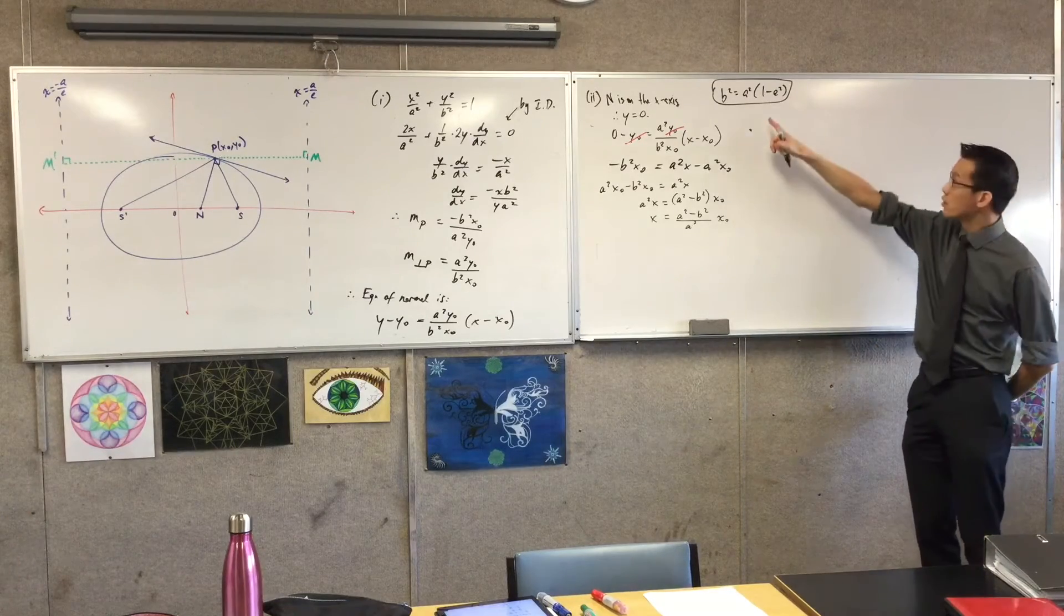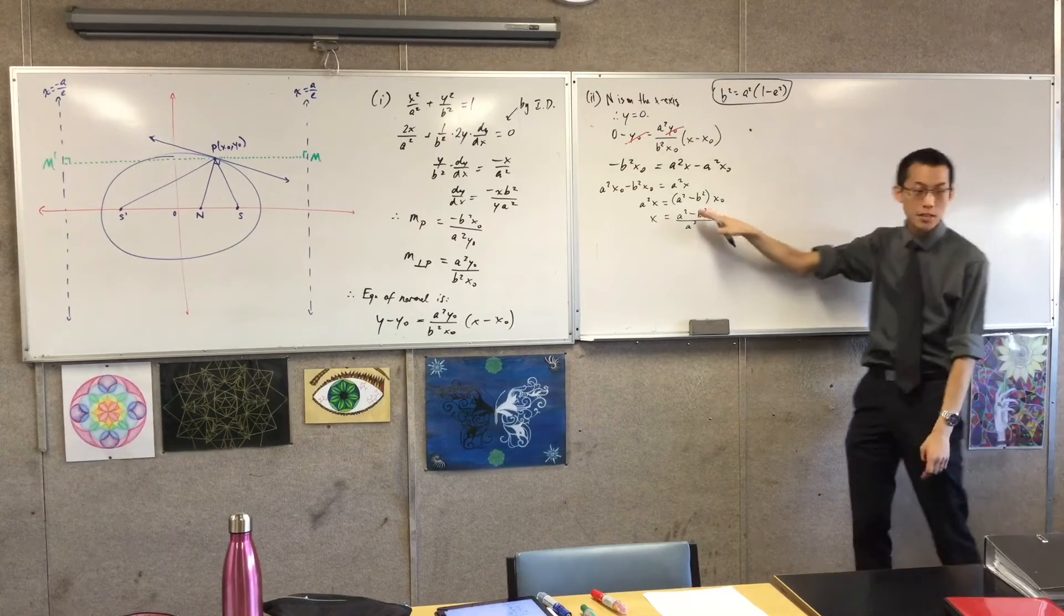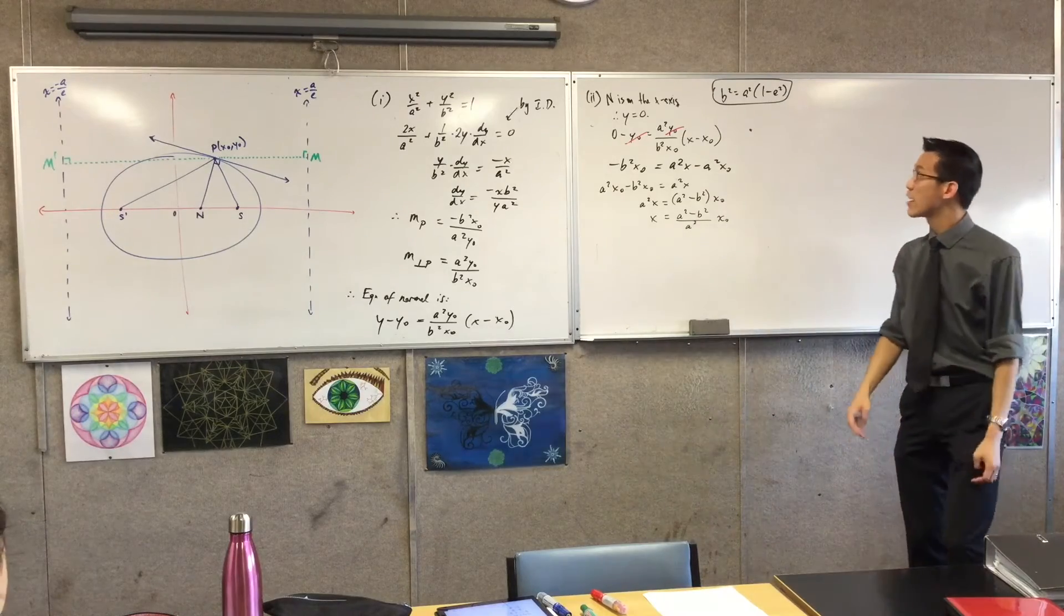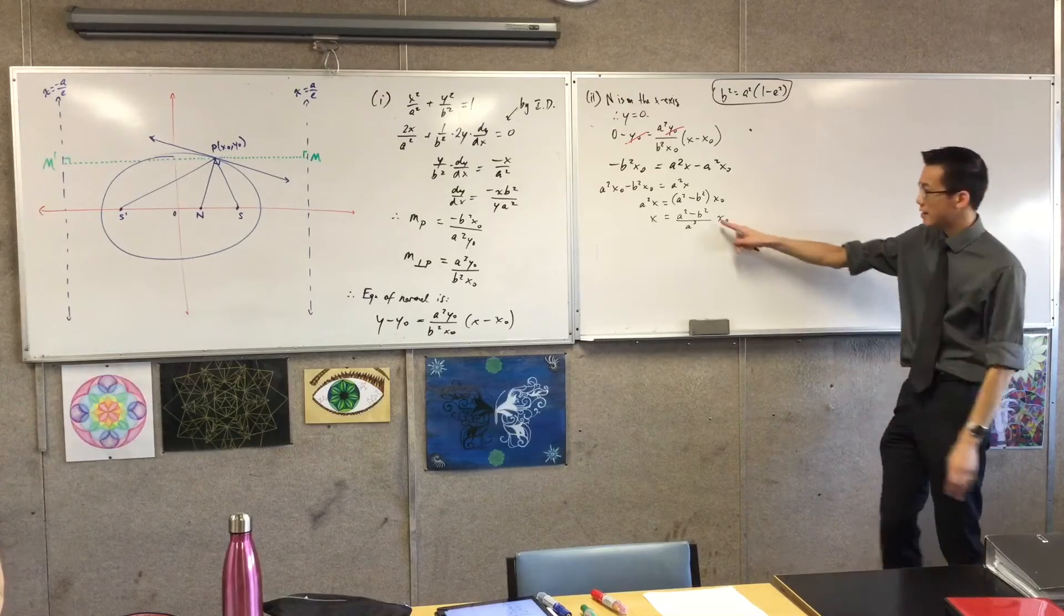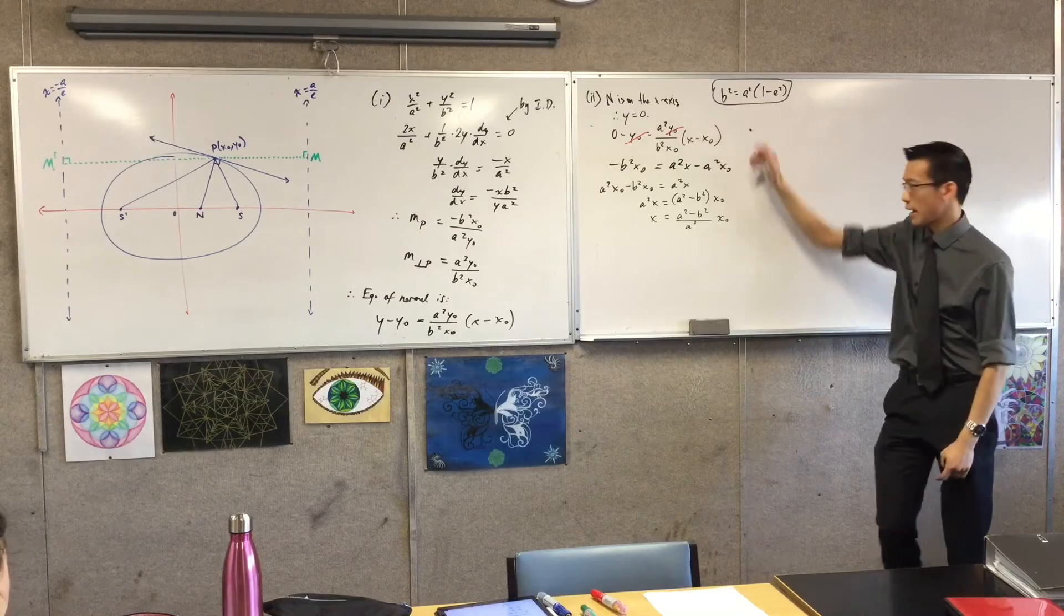So I'm getting a-squared minus b-squared all over a-squared. Now, this ought to make me very suspicious. I haven't done anything dramatic with the algebra. I have a fraction here, but I'm not expecting a fraction. I'm expecting this thing is just going to come out and be e-squared. Anyone want to suggest what I should do?